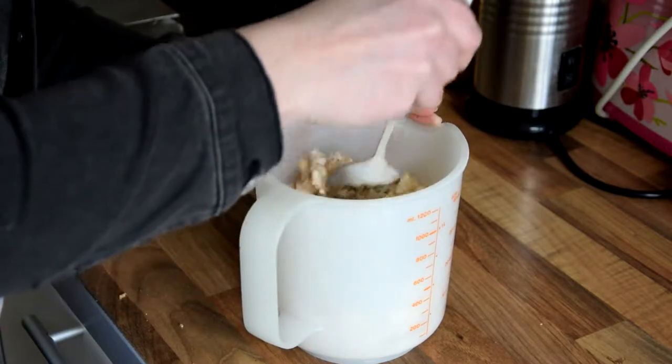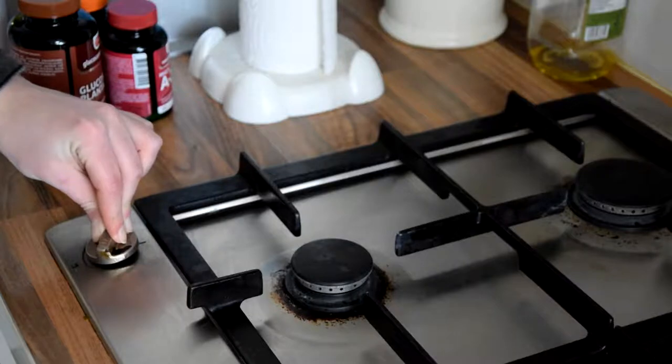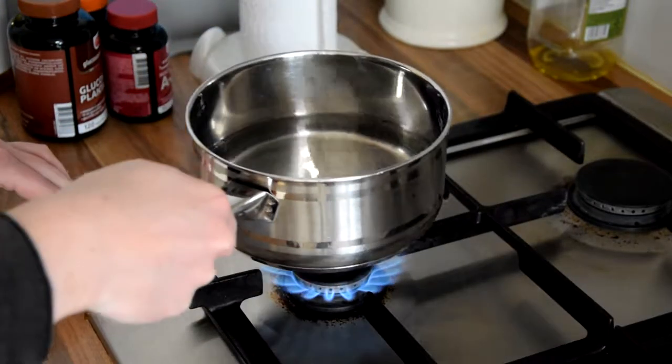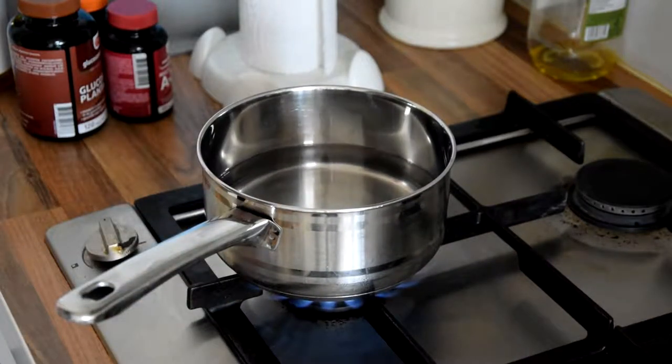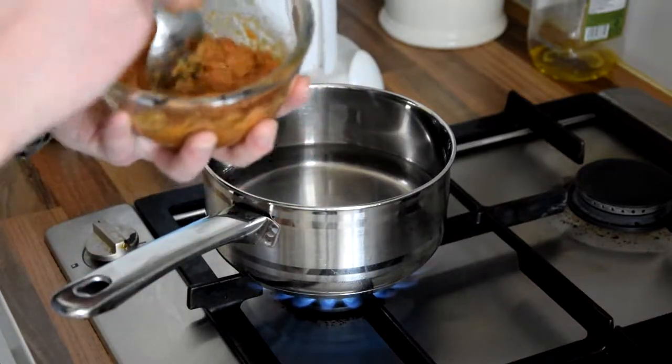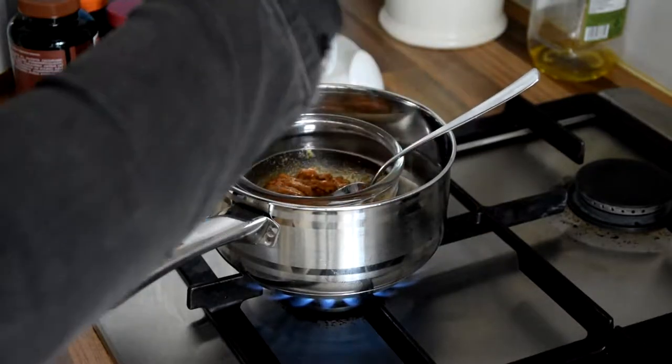Next we're going to melt the peanut butter with maple syrup and the chocolate. Heat the water in the pan on the stove. The best way to do this is to use a big glass bowl on top of a small pan. But since this is the smallest pan and biggest bowl I could find, I'm going to do it this way. When the water is hot, melt the peanut butter and maple syrup first. We heat it to make it more liquid to make mixing easier.